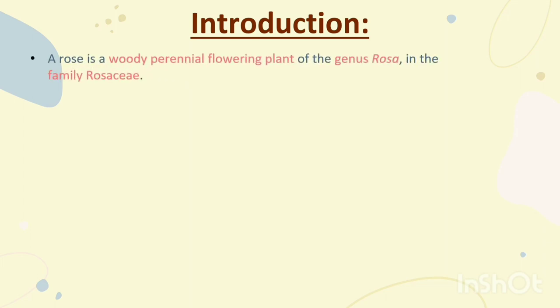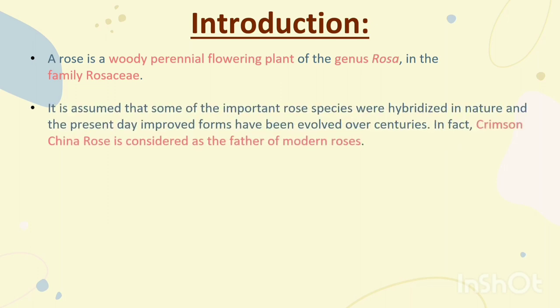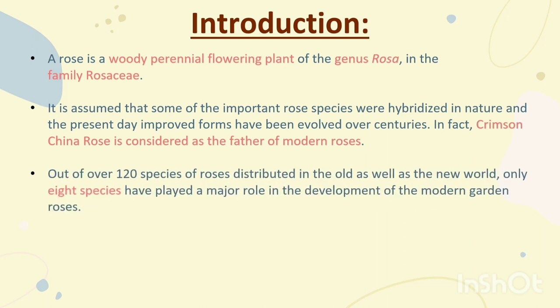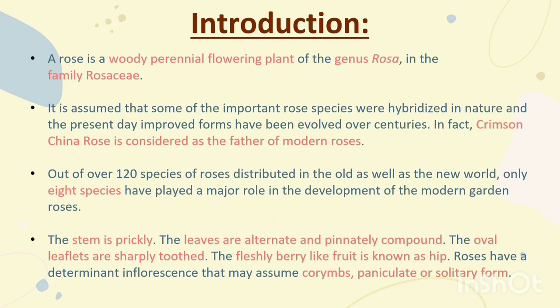Introduction. A rose is a woody perennial flowering plant of the genus Rosa in the family Rosaceae. It is assumed that some important rose species were hybridized in nature and the present-day improved forms have been evolved over centuries. Crimson China Rose is considered as the father of modern roses. Out of 120 species of roses distributed in the old as well as the new world, only eight species have played a major role in the development of modern garden roses. The stem is prickly, the leaves are alternate and pinnately compound, the oval leaflets are sharply toothed, and the fleshy berry-like fruit is known as hip.